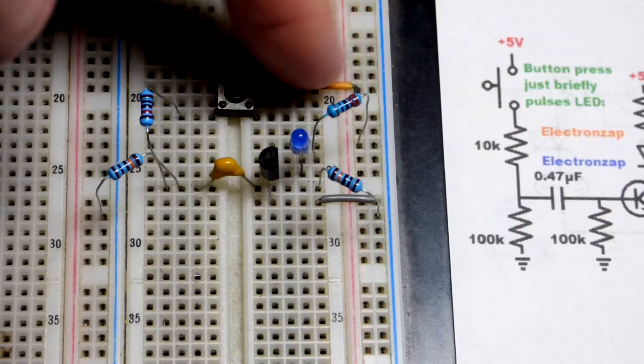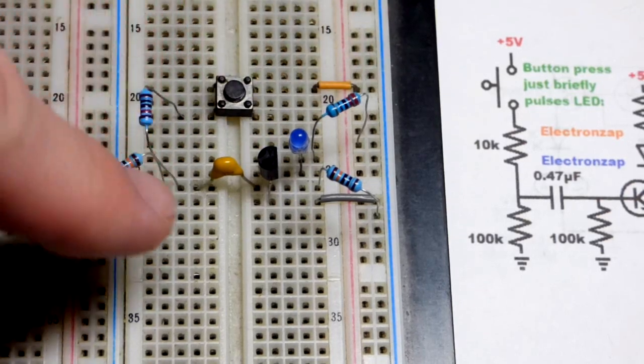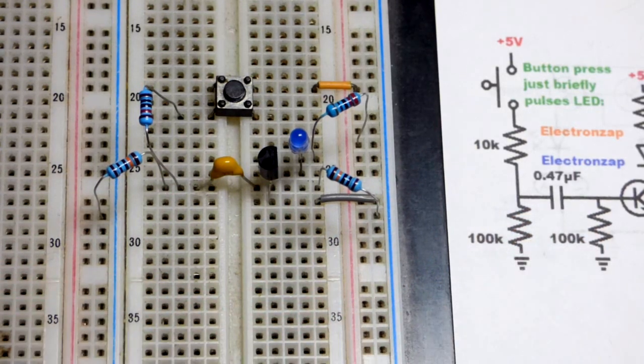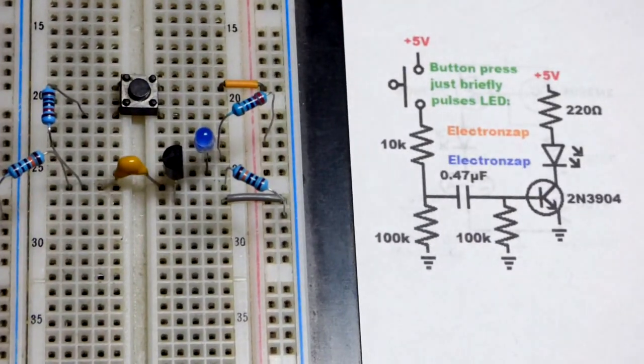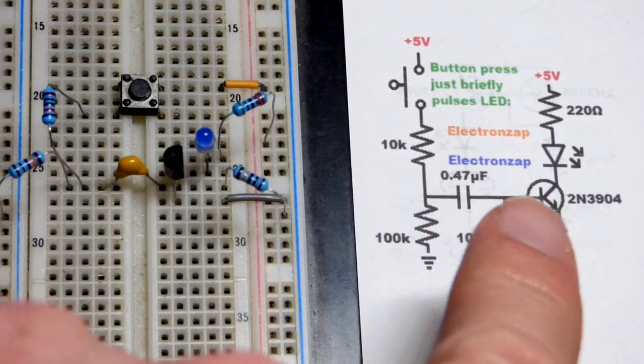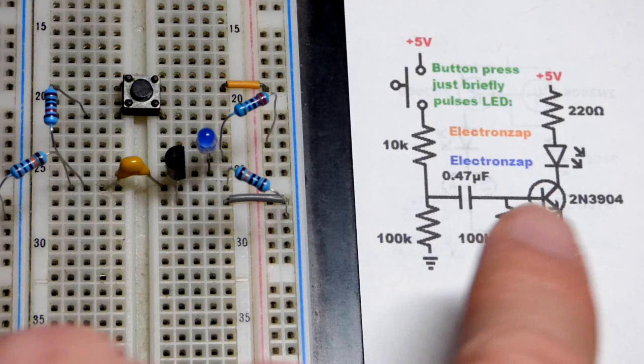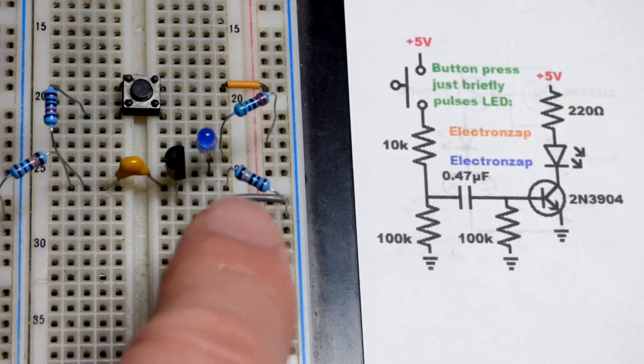So when we press the switch, you can see that the capacitor charges this way through a 10-kilohm resistor. It's only a 0.47 microfarad capacitor, though. Now it also charges through the base-to-emitter right there of the NPN bipolar junction transistor, we're using a 2N3904.